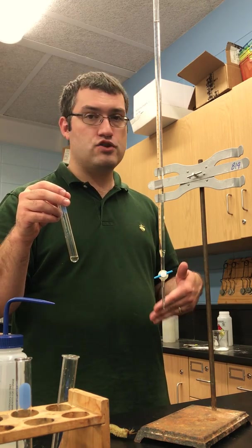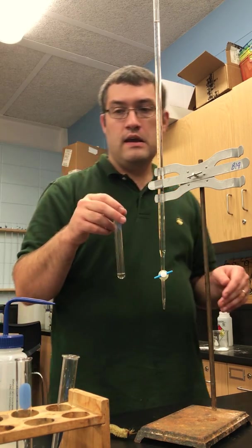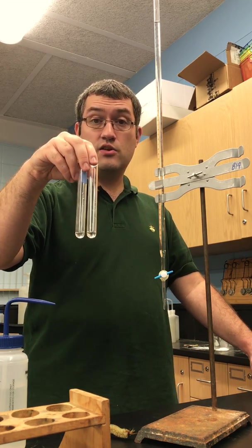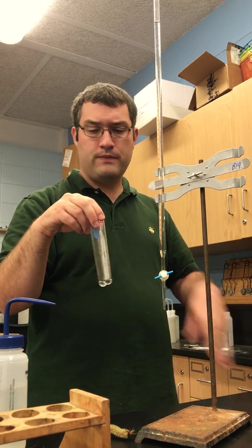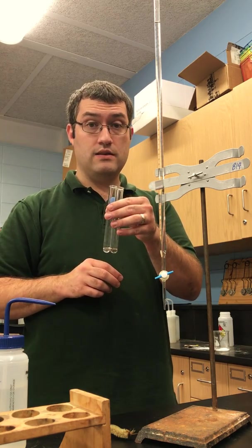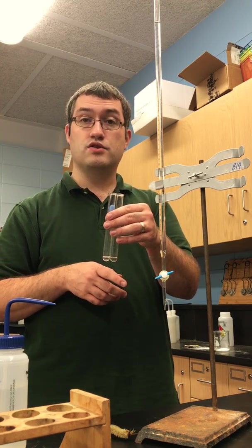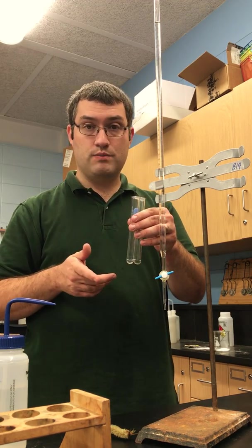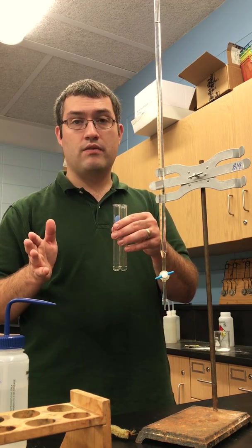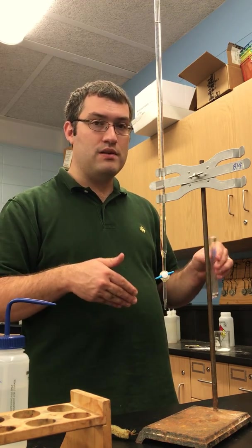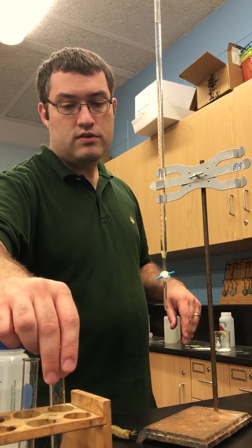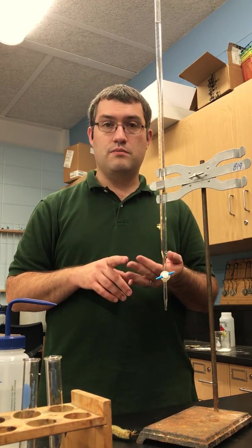We're recording any kind of change that we see. Now test solution D only applies to test tubes that you've tested already with A and B. So this is my solution A, this is my test solution B in here. If any of them form a precipitate, what I'm going to do is add a couple drops of test solution D. If both of them form a precipitate, I'm going to add D to both of them and record if anything changes. If neither of them have a precipitate, I don't add any D. Or if one has a precipitate, you add to that, but not to the one that didn't precipitate. So only to precipitates are we going to add a solution D. I'm going to do that and record my observations for the test solutions A, B, C, and D.